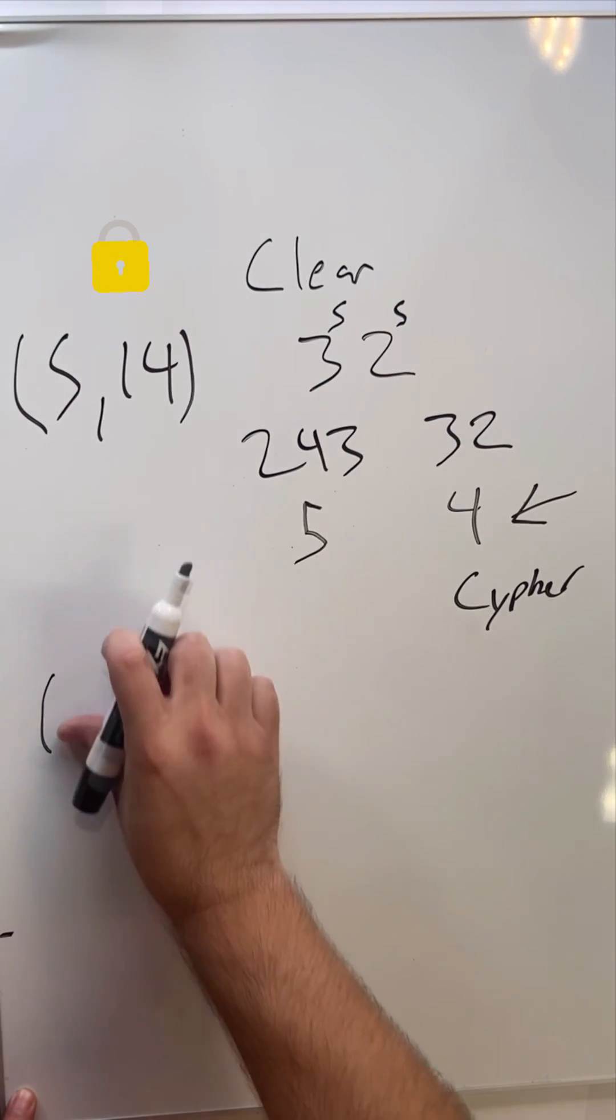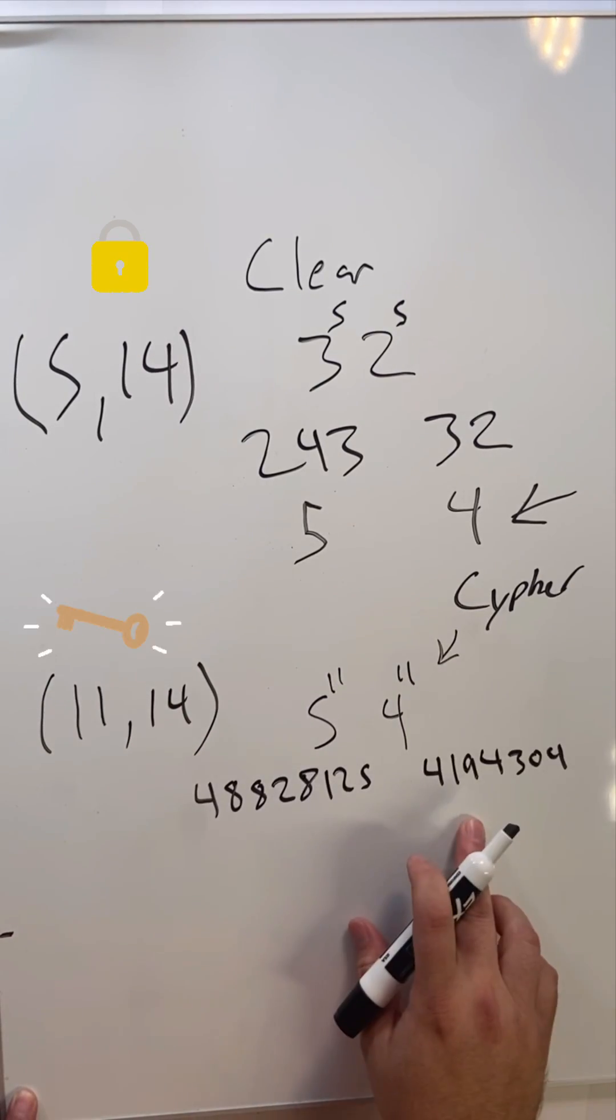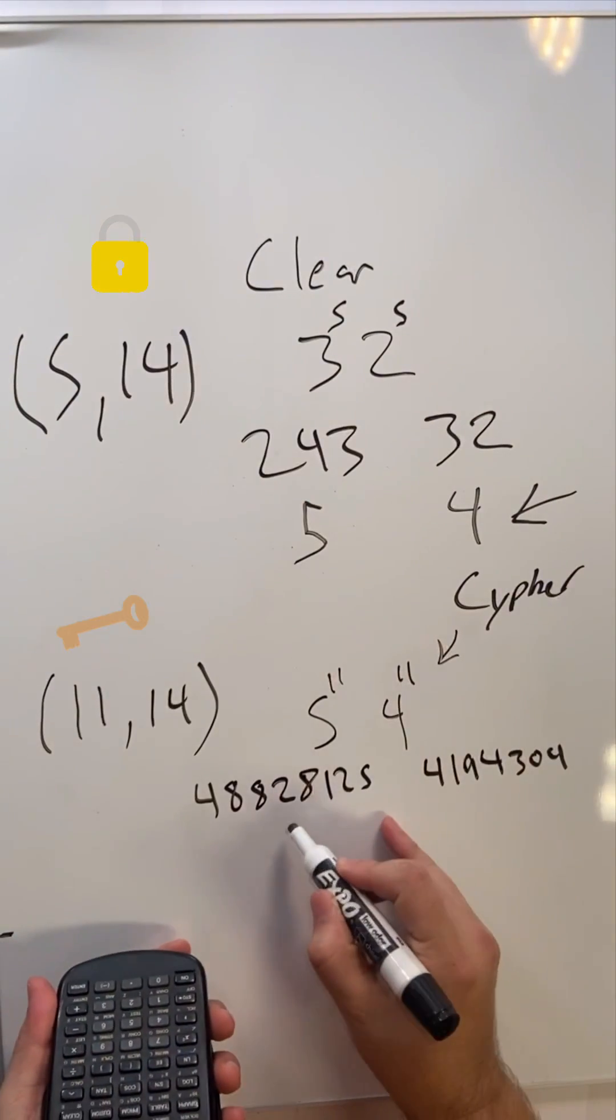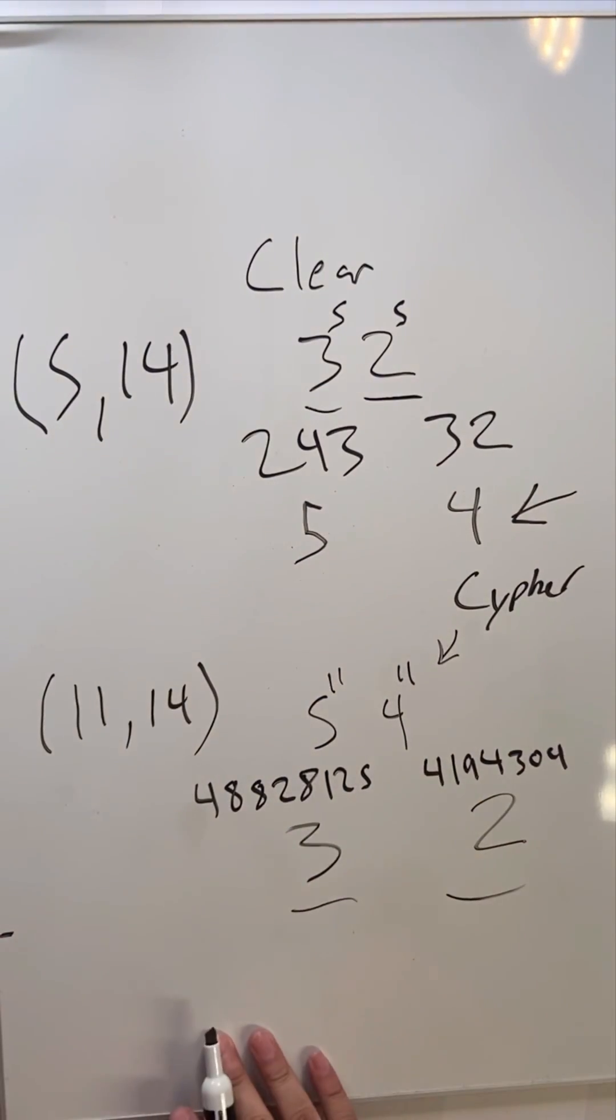In this case the only number that this will work with is 11. So we do the math again and we end up with these large numbers and after some upside down calculator I get the remainder and I end up with 3 and 2, the exact same as our clear text.